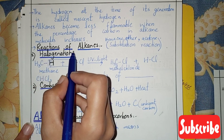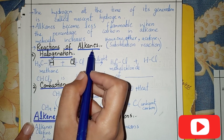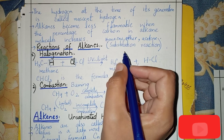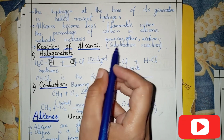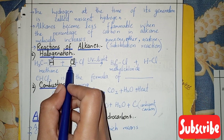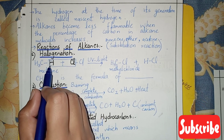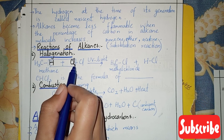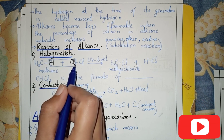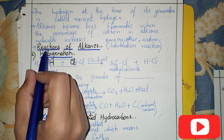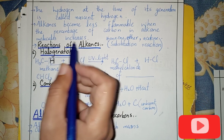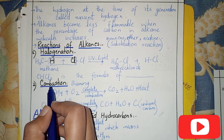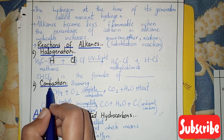Reactions of alkanes are called substitution reactions. In a substitution reaction, an atom or a functional group is replaced by a different functional group. The reactions of alkanes include halogenation and combustion.